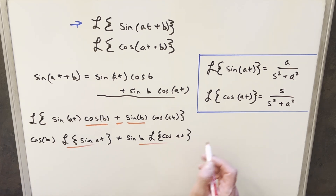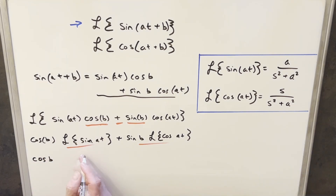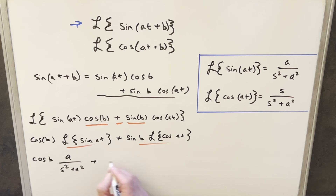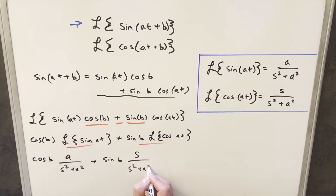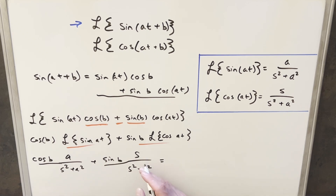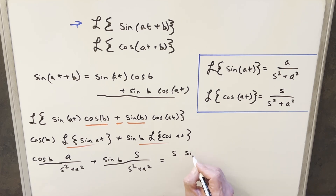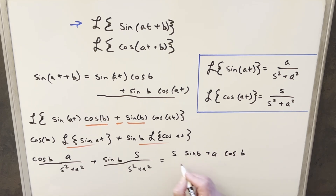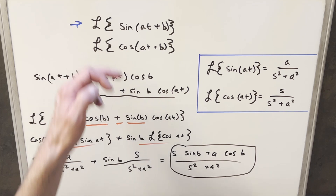For each of these, we just use our formulas over here to the right. So we have cosine b times a over s squared plus a squared, plus sine b times s over s squared plus a squared. Notice we already have a common denominator of s squared plus a squared, so we put these together. Reordering, we write this as s sine of b plus a cosine b, all over s squared plus a squared. This is our value for the Laplace transform of sine at plus b.